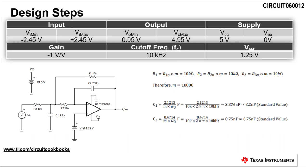Given the cutoff frequency design goal of 10 kilohertz and our scaling factor of 10,000, we can use the given equation to calculate the values of C1 and C2.